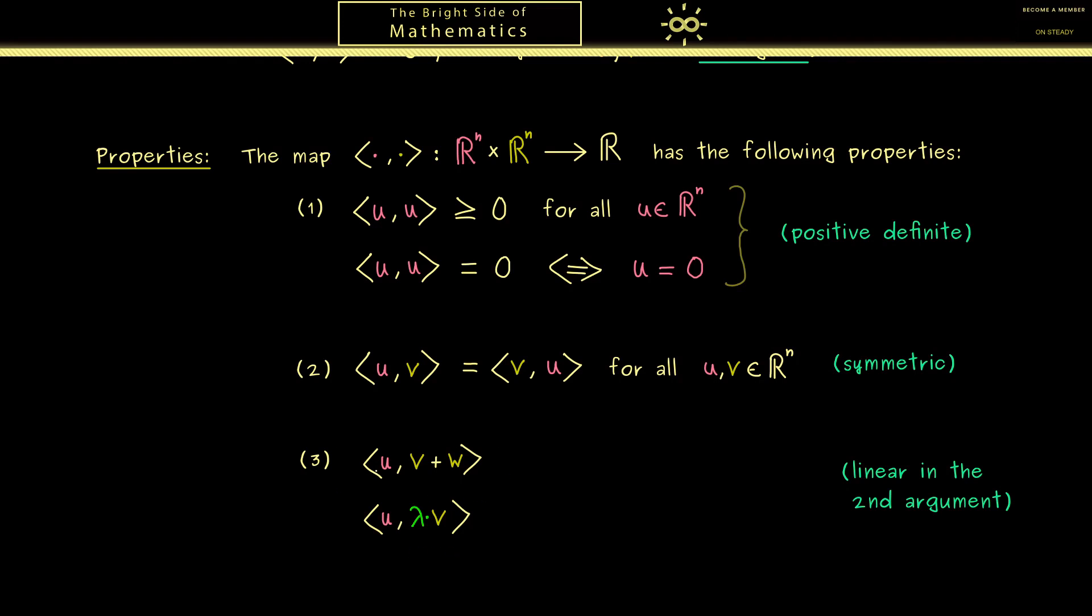Now in this case we have that the inner product of u with v plus w is equal to the inner product u with v plus the inner product u with w. So this is what I mean when I say we can pull out the addition sign. However please note here this on the left hand side is the addition of vectors, and here we have the addition of two real numbers. Now in a similar way we can pull out the scalar lambda here, which means it's lambda times the inner product of u with v.